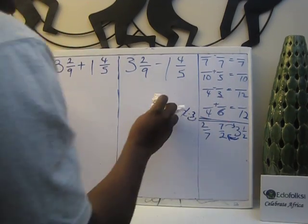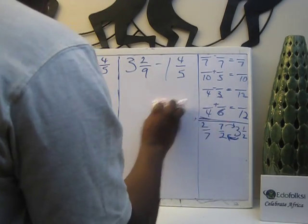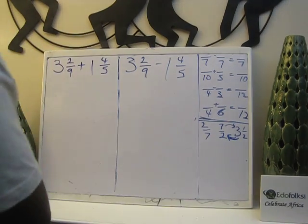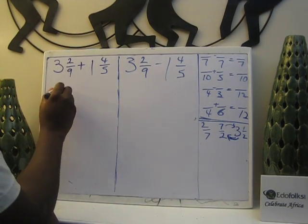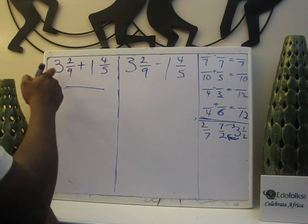So now let's solve these two problems here. Whenever I have whole numbers and addition, I just add. Three plus one is four.